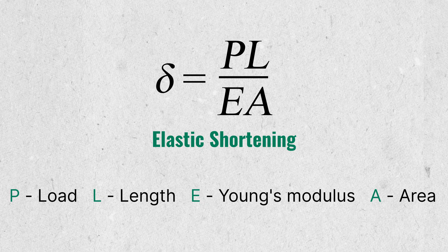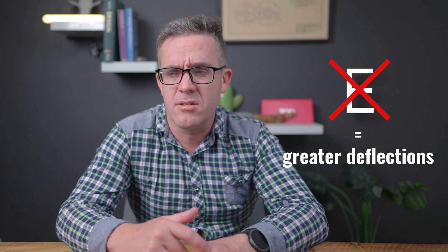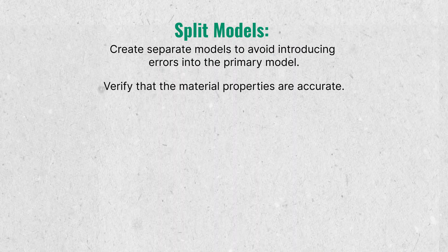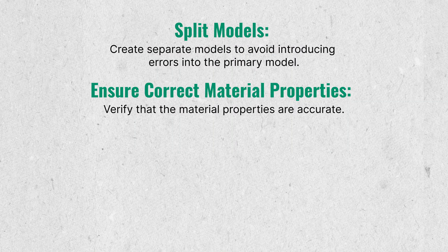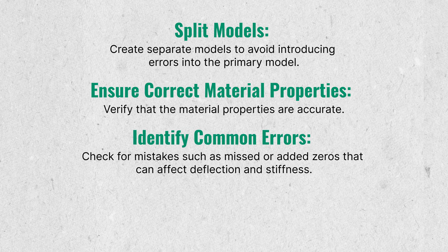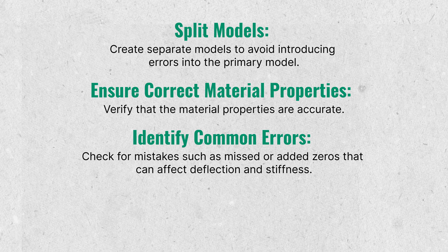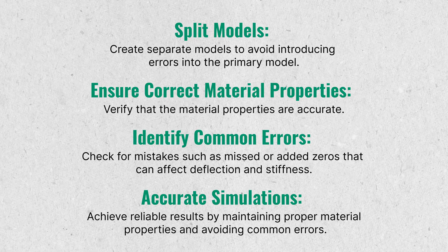Sometimes you may intentionally change E to mimic elastic shortening or to soften something to see where forces are going. But if you do that, make sure you're splitting it off to a different model so you haven't introduced errors. Sometimes you may have missed a zero and something is deflecting far more than it should, or added a zero and it's far stiffer. Either way, making sure you're using the correct material properties is really critical.